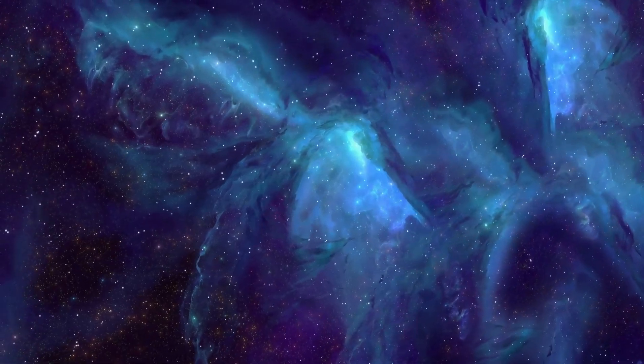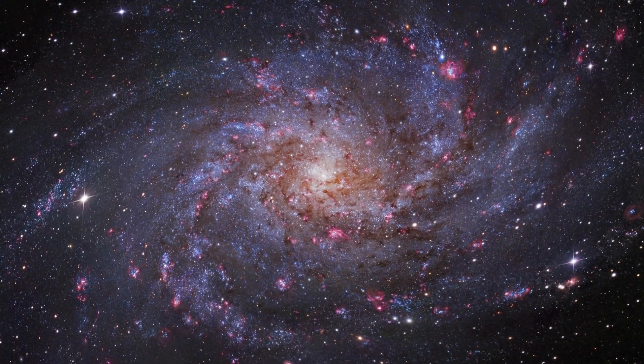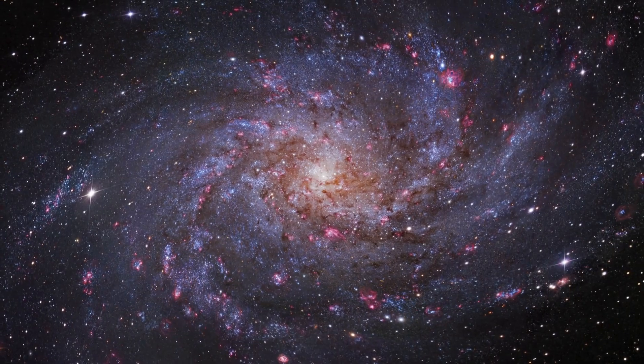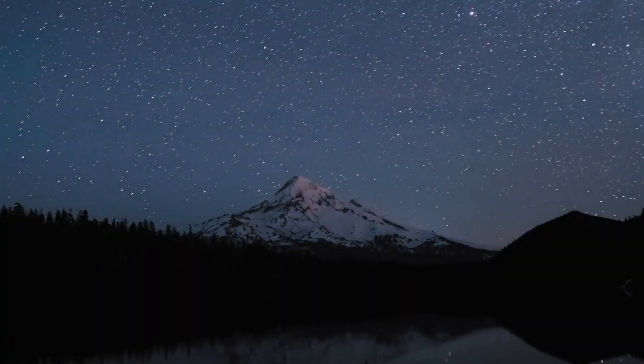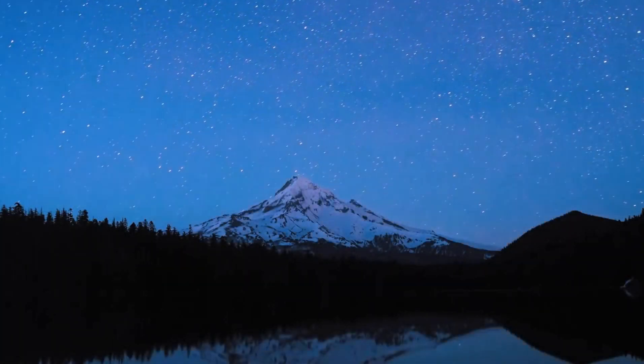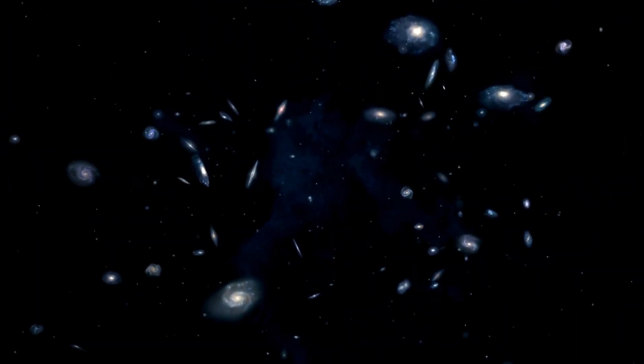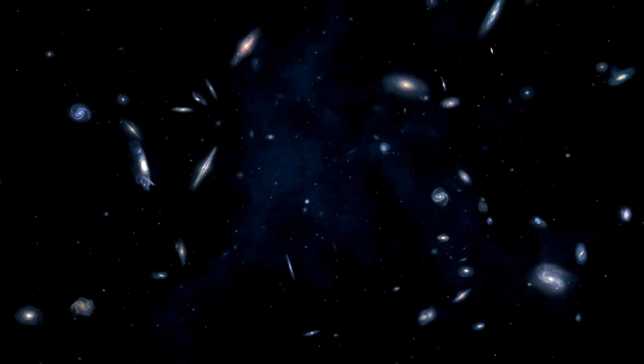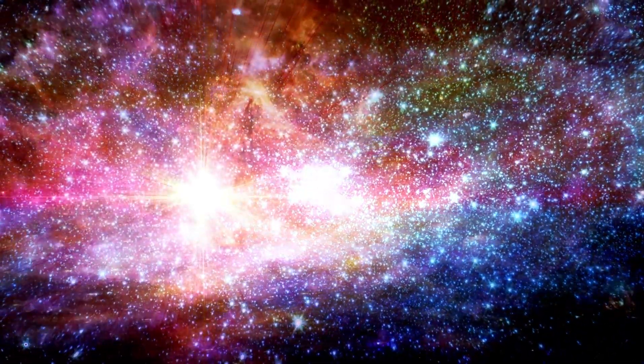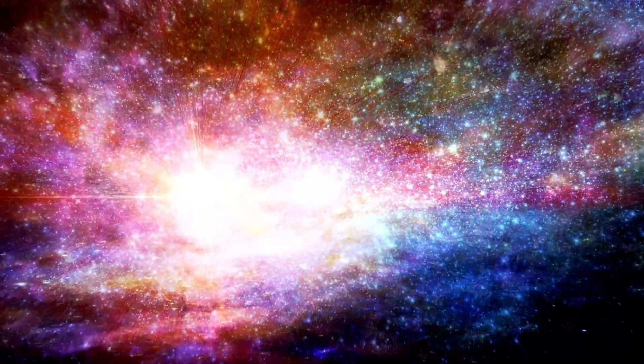But as stars run low on hydrogen, they evolve, embracing new energy sources. In the case of Betelgeuse, as the hydrogen depletes, it begins to burn helium, leading to the formation of carbon and oxygen. This transition from the main sequence phase to the helium-burning phase is marked by the star's expansion into a red giant.